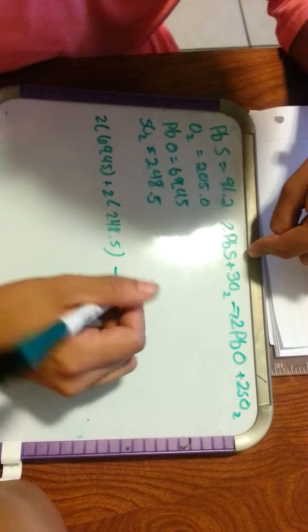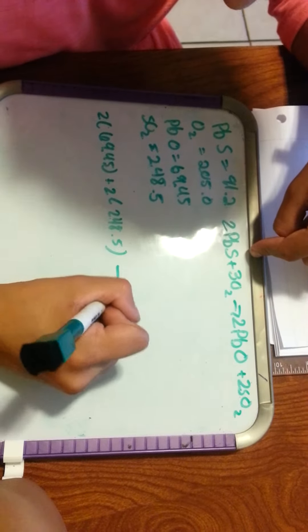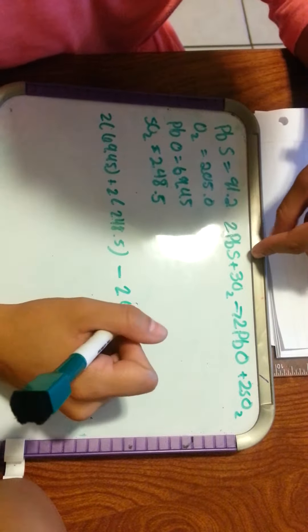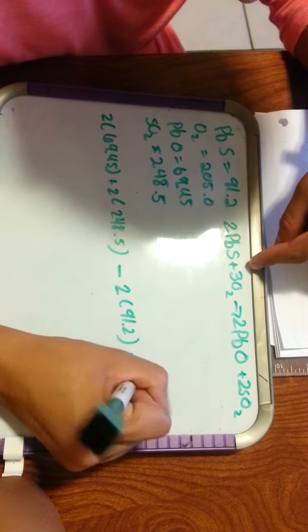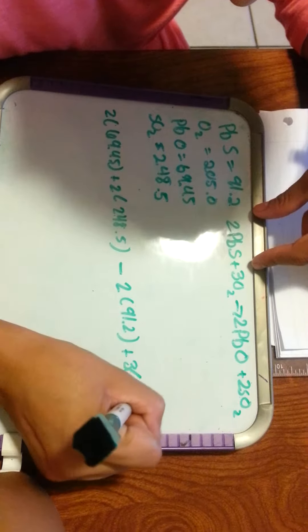Minus our products which is 2PBS which is 91.2 plus 3 of our oxygens which is 205.